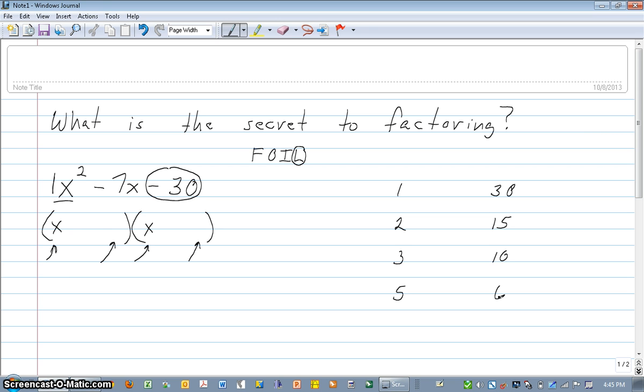Now, we have to also remember that this 30 in our trinomial is negative. So we can have negative 1 and positive 30, or it could be positive 1 and negative 30. It could be negative 2 and positive 15, or vice versa. And so on. So that means that we have lots of options. How in the world are we ever going to know which pair to use in our factoring? Well, the trick here is that not only do the numbers need to multiply up to negative 30, they need to add together to this middle coefficient, negative 7.